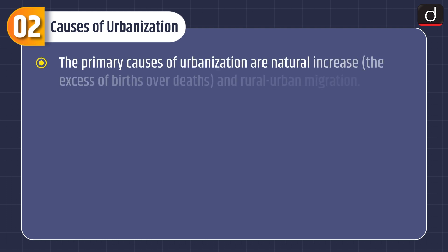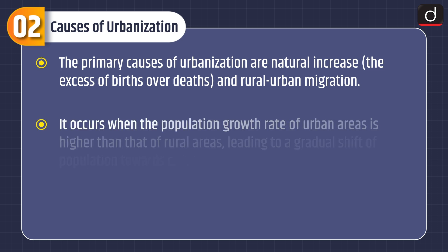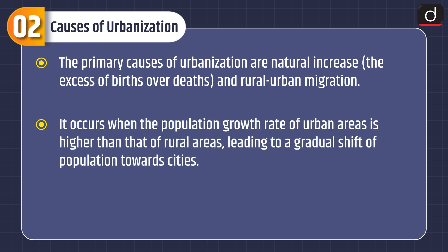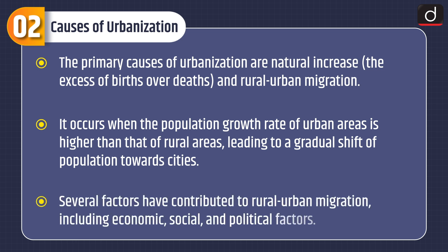Now let's discuss about causes of urbanization. The primary causes of urbanization are natural increase — that is, the excess of births over deaths — and rural-urban migration. It occurs when the population growth rate of urban areas is higher than that of rural areas, leading to a gradual shift of population towards cities. Several factors have contributed to rural-urban migration, including economic, social, and political factors.